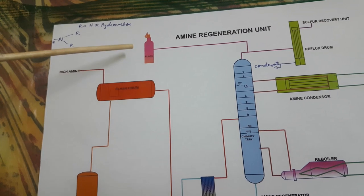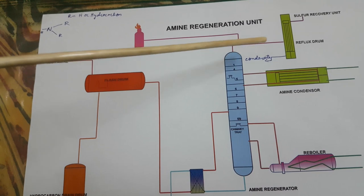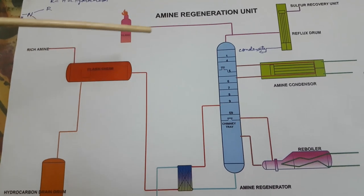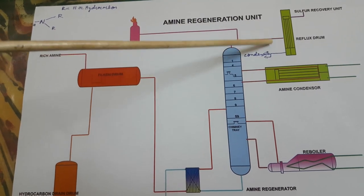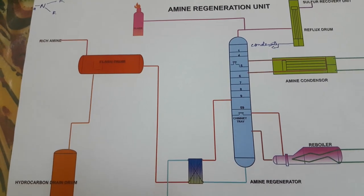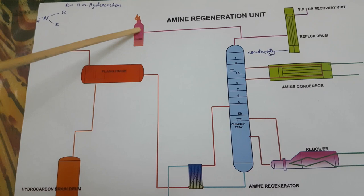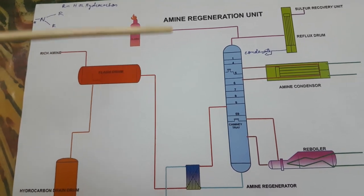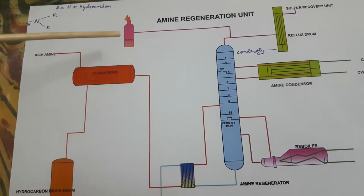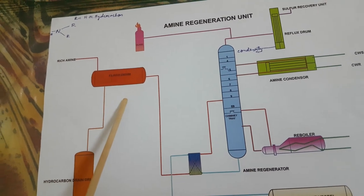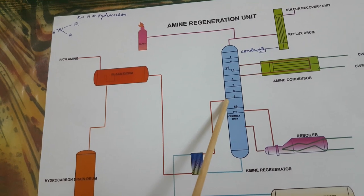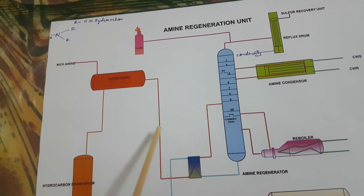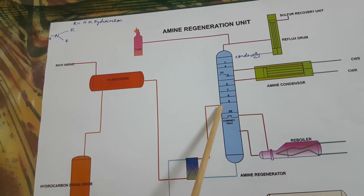Now let's go for the flare. If there is a problem in the sulfur recovery unit or if pressure increases, the sour gas is sent to the flare where it is burned. If there is a control malfunction or problem in the sulfur recovery unit, the gas is sent to the flare where it burns and is released to the atmosphere. This is a temporary option just to reduce pressure — not a continuous or routine operation. That is why we have a flare system.